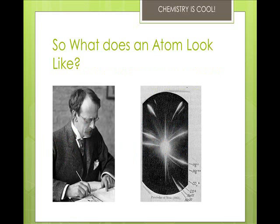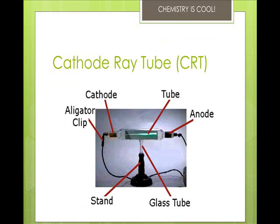J.J. Thompson was an English physicist in 1897. He made a piece of equipment called a cathode ray tube — a vacuum tube where all the air had been pumped out and a limited number of other gases had been pumped in. These used to be in televisions and computer monitors. CRTs work by passing an electric current through it, which makes a beam appear to move from the negative to the positive end. By adding an electric field, he found that the moving pieces were negatively charged.